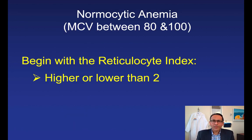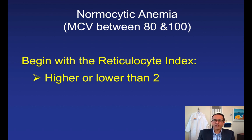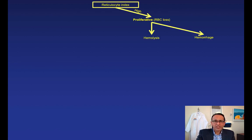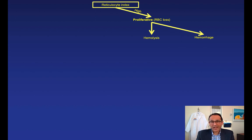Finally, normocytic anemia is where the MCV is between 80 and 100. We begin with the reticulocyte index — there are easy calculators that account for the hematocrit and maturation factor. A reticulocyte index greater than 2 indicates a proliferative anemia, usually due to red blood cell loss. The patient may be hemorrhaging in the GI tract, which is most common, or into the lungs, bladder, or from a recent heart catheterization site such as the groin or thigh. Usually you need to find it and fix it.